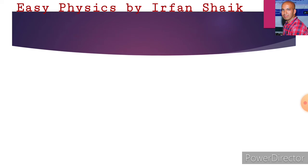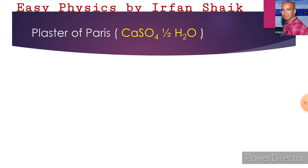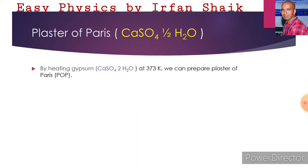Let us learn about another common salt — plaster of Paris. Its formula is CaSO4·½H2O. By heating gypsum at 373 Kelvin, we can prepare plaster of Paris, which we simply call POP. The formula of gypsum is CaSO4·2H2O. It is also called calcium sulfate hemihydrate, because each water molecule is attached with two calcium sulfate molecules.